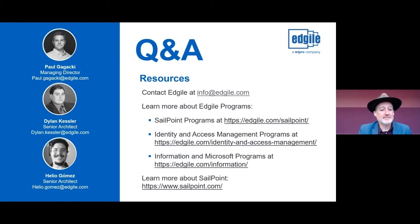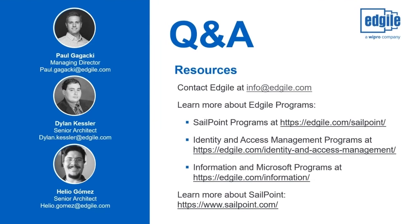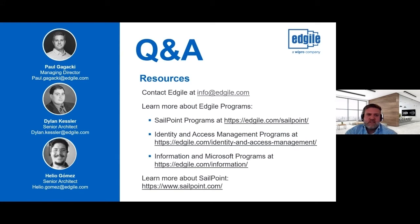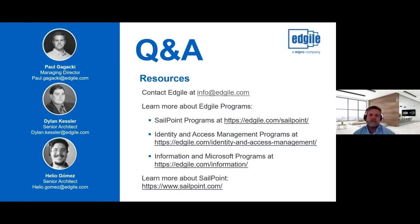Q: How long do strategies and deployments take? Strategies are typically four to six, maybe eight weeks, though they can run longer depending on client availability and time needed to present to management. Deployments are harder to nail down — it depends on organization size, number of applications to onboard, entitlement cleanups, role work, and other variables. Feel free to reach out for a specific estimate.